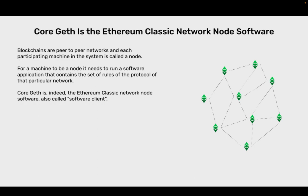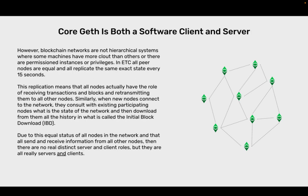CoreGeth is the Ethereum Classic network node software. Blockchains are peer-to-peer networks and each participating machine in the system is called a node. For a machine to be a node, it needs to run a software application that contains the set of rules of the protocol of that particular network. CoreGeth is indeed the Ethereum Classic network node software, also called software client. All peer nodes are equal and all replicate the same exact state every 15 seconds. This replication means that all nodes actually have the role of receiving transactions and blocks and retransmitting them to all other nodes.